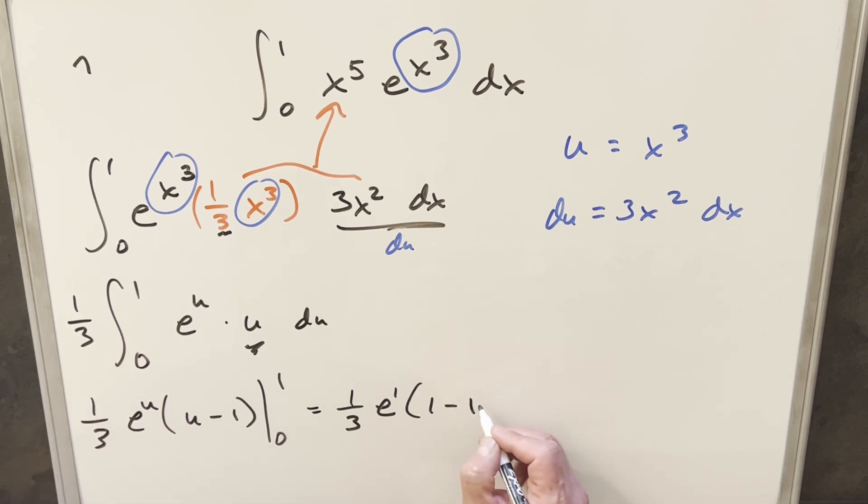And this is going to be 1 minus 1. But, of course, this thing is 0. So this whole first term is going away. So then we just need to evaluate at 0. We've got a minus sign here.